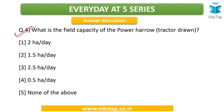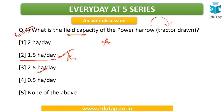The next question: what is the field capacity of a power harrow which is tractor drawn? Most students in the comments have mentioned 2.5 hectares per day. However, as per our understanding, the answer tends to be 1.5 hectares per day. There can be a discrepancy because different sources give different values. So as per our understanding it is 1.5 hectares per day, but we would like you to mention your source in the comments so we can cross-check. Let us keep this question open for discussion.